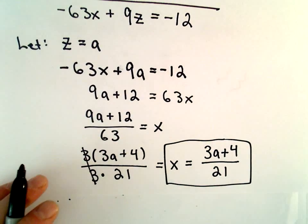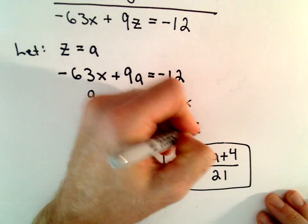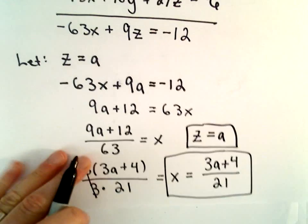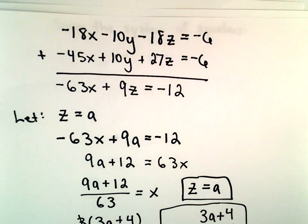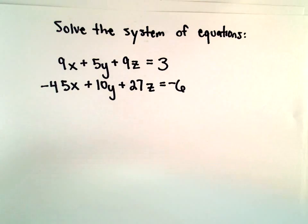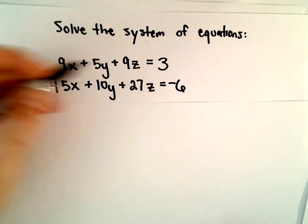So now we've got our value for x. We said that z was equal to a. Now we just need to go back and figure out the value for y. It doesn't matter which equation we use. I'm going to use the first one just because the numbers are a bit smaller.